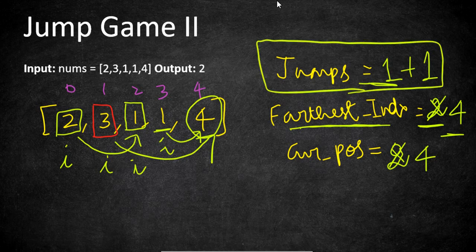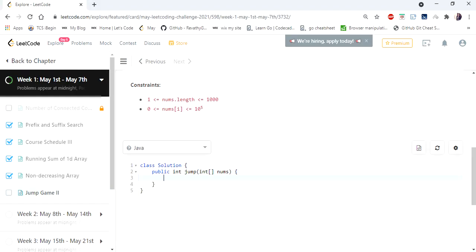So clearly we are checking every time what is the farthest index we can reach and updating the values accordingly to arrive at our solution. This works in O(n) time. Let's go to the code now.